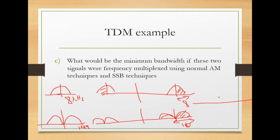To summarize the example: part one gave us 40 kHz for the minimum commutator clock frequency. Part two gave us a filter bandwidth of 20 kHz (fn/2). Part three gave us 18 kHz for single sideband FDM and 36 kHz for double sideband FDM. The most important thing is that you understand the drawing and the reasoning behind the numbers and how they fit into the equations.